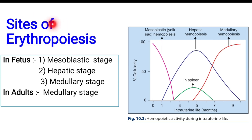Sites of erythropoiesis — before discussing the fetus, we look at adults. In adults, the bone contains a medullary cavity which has bone marrow, and here exactly the erythropoiesis occurs. Looking at the fetus, bone formation takes some amount of time. Before the formation of bones, there are some organs where erythropoiesis occurs. At exactly the second week of gestation, erythropoiesis starts in the yolk sac, which contains cells with multilinear differentiating capabilities.